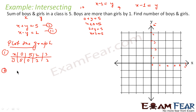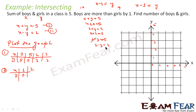Similarly, we will plot the graph for equation 2, x minus y equals 1. If x equals 1, then 1 minus y equals 1, so y equals 0. If x equals 2, then 2 minus y equals 1, so y equals 1. If x equals 3, then 3 minus y equals 1, so y equals 2. We have three points: (1,0), (2,1), and (3,2) — three points are sufficient to plot the graph.